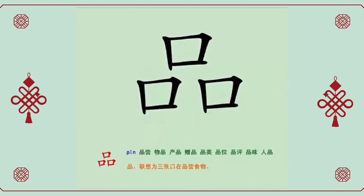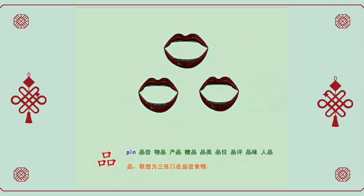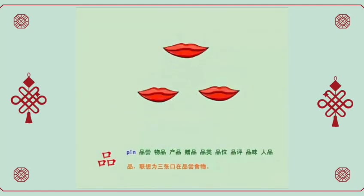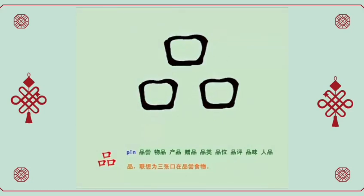品 has two meanings: to taste something, and goods. Think of it as three mouths tasting food. 品尝, to taste. 增品, complementary item. 餐品, product.